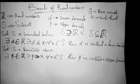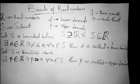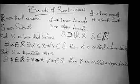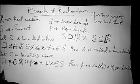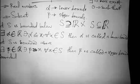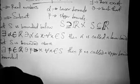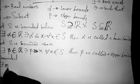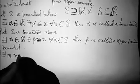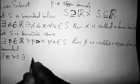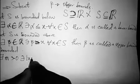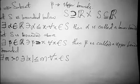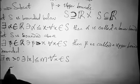A set is said to be bounded if it is bounded above and bounded below. You have to know that your set is only said to be bounded if it is bounded above and bounded below — that is very important. We can write that with this notation: if there exists a constant M greater than 0, such that the modulus of x is less than or equal to M for all x in your subset S.